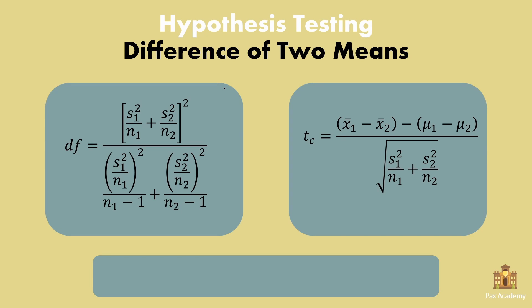Hypothesis testing with difference of two means can seem very difficult due to the formulas. However, I promise you that after we solve an exercise, it will be crystal clear to you how to solve these exercises. So first, let's look at the two formulas we need to use: a formula for the degrees of freedom and one for the calculated t-value. They look difficult, but don't worry — it will be simple once we go through them.